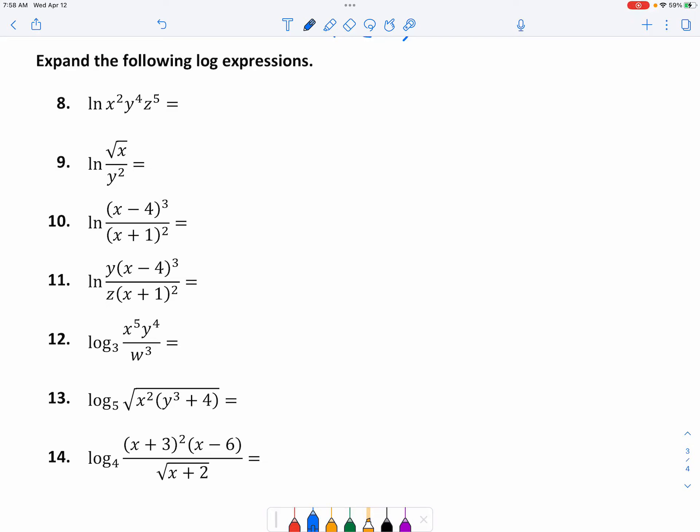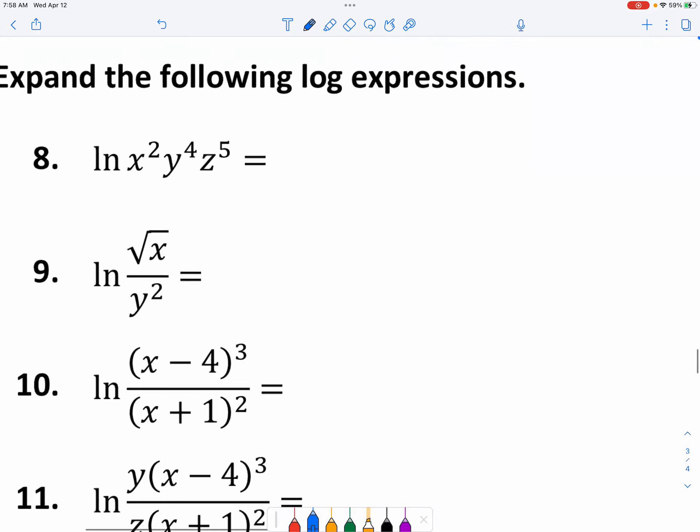And the next thing is that you always move the exponents to the front as a coefficient. So when you do number eight, you can pretty much go ahead and write down 2 ln(x) + 4 ln(y) + 5 ln(z).